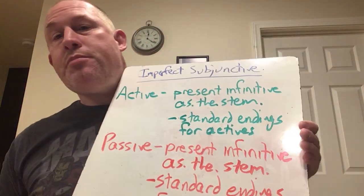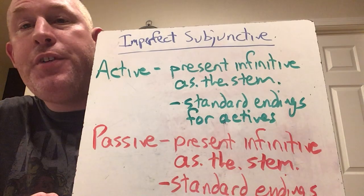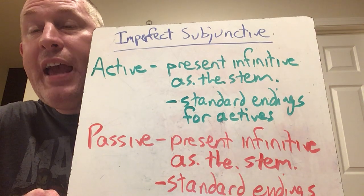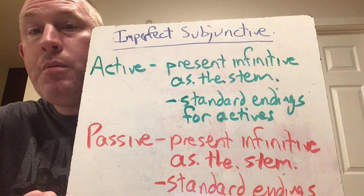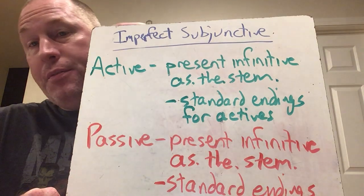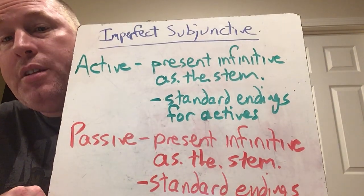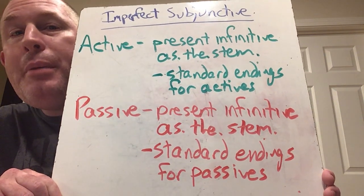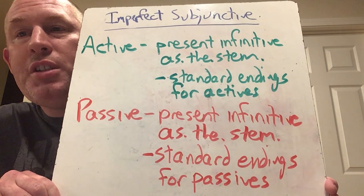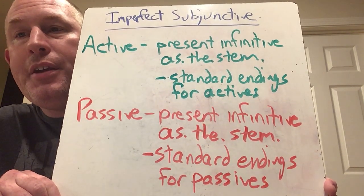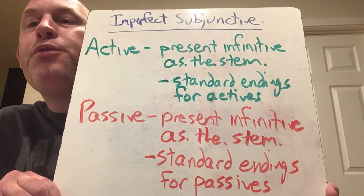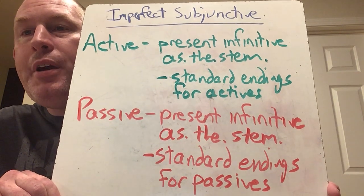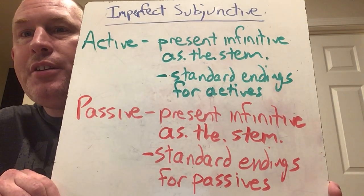For the imperfect subjunctive, you're going to take the present infinitive as the stem, and then you're going to add on the standard endings for the active voice. And for the passive, you're going to use the present infinitive again as the stem, and you're going to use the standard endings for the passive. What I mean by standard endings is essentially your M, S, T, mus, tis, nt and your ris, tur, mur, mini, ntur endings. What goes in front of that will often determine if it's present or imperfect or future or whatnot. But at the end of the day, it's just the same basic standard endings.